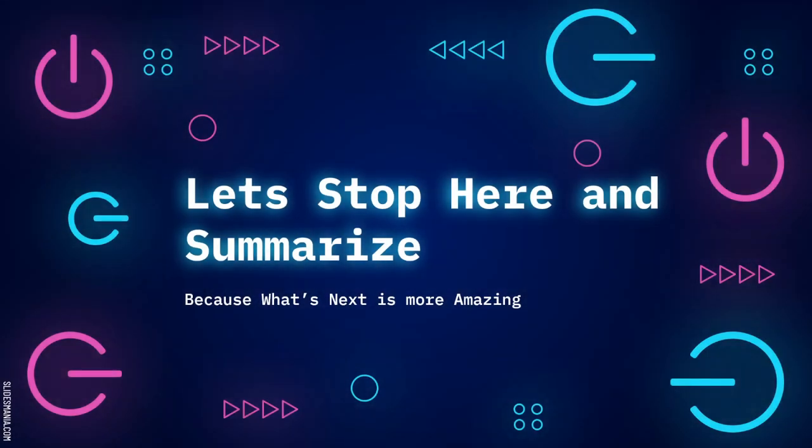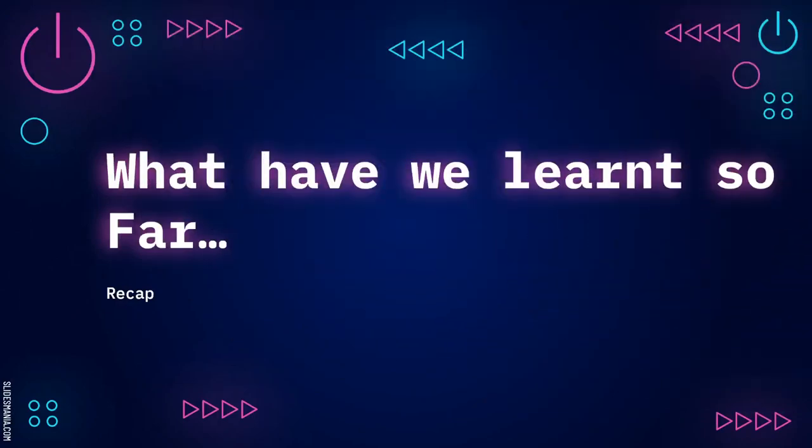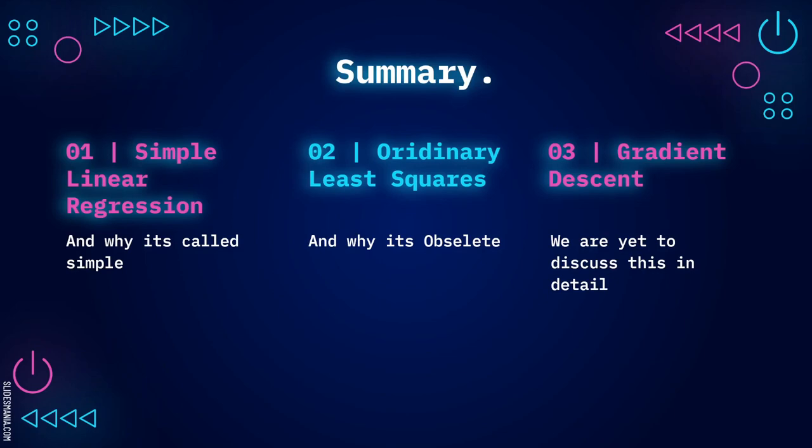Alright, let's stop here. Because the next concept is where we start introducing you to machine learning. So, let's consolidate what we have learned so far. We understood what is simple linear regression and why it is called simple. Because there is only one X variable and one Y variable. If there is more X variable, it's called multiple linear regression. And if we have more Y variables, it's called multivariate regression.